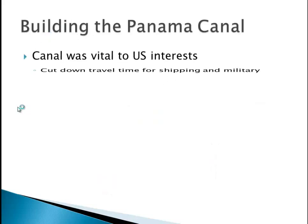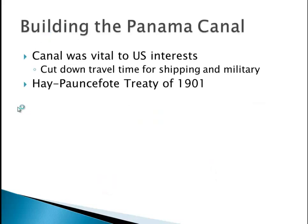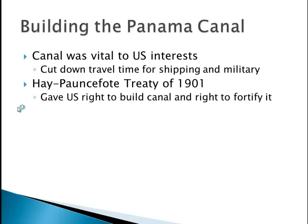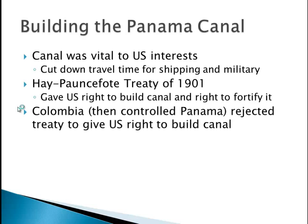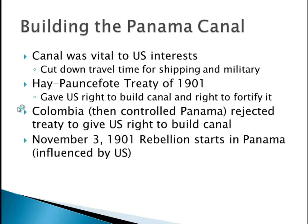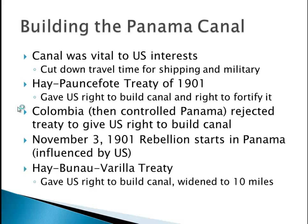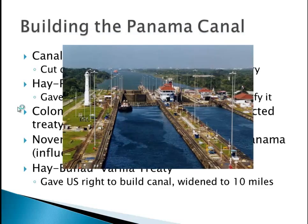The Panama Canal was going to be very vital to U.S. interests — it cut down travel time for shipping and the military. The first treaty, the Hay-Pauncefote Treaty of 1901, gave the U.S. the right to build a canal and the right to fortify it. Problem was Colombia, who was then in control of Panama, didn't like this treaty. On November 3rd, 1903, there was a rebellion that started in Panama influenced by the United States — they sent ships down and didn't allow the Colombians to put down the rebellion. Panama got its independence, and the Hay-Bunau-Varilla Treaty gave the U.S. the right to build the canal in a zone widened to 10 miles.